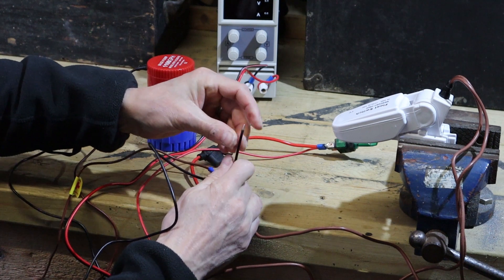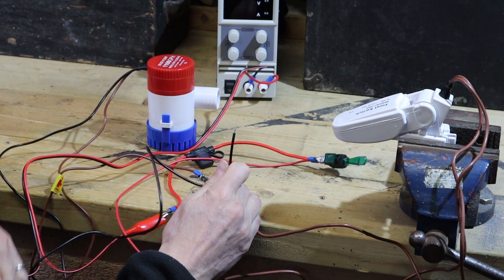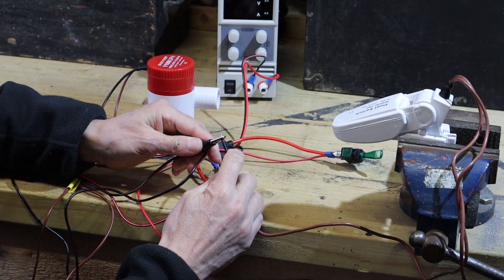The negative wire from the bilge pump we are going to connect to the negative feed.